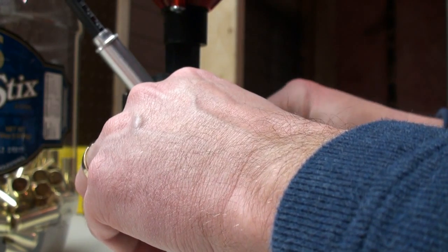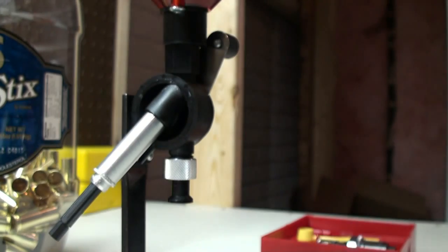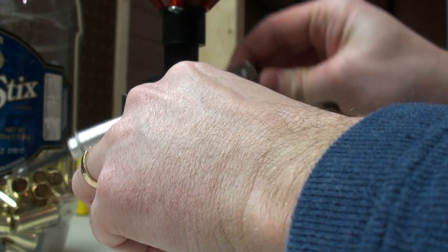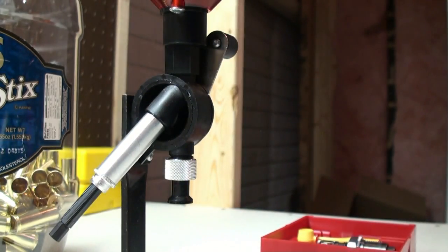What I like to do is cycle it a few times to make sure I get an accurate measure. So there's my powder. I'm going to measure it. It's showing 42.5.